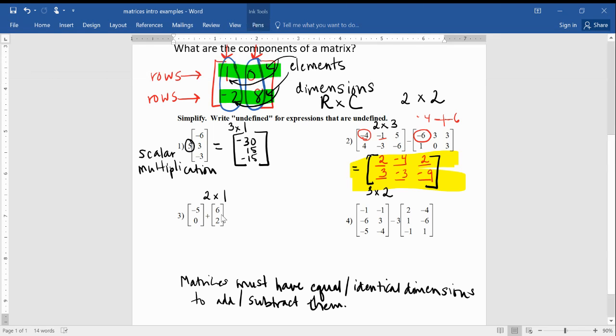Moving on, I've got another one here for you. This is an addition example, and again, if the dimensions are not identical or equal, then we can't even do this, but they are. I should have had this be number 2, right? Negative 5 plus 6, that's 1, and 0 plus 2 is 2. So our answer is still a 2 by 1 matrix.